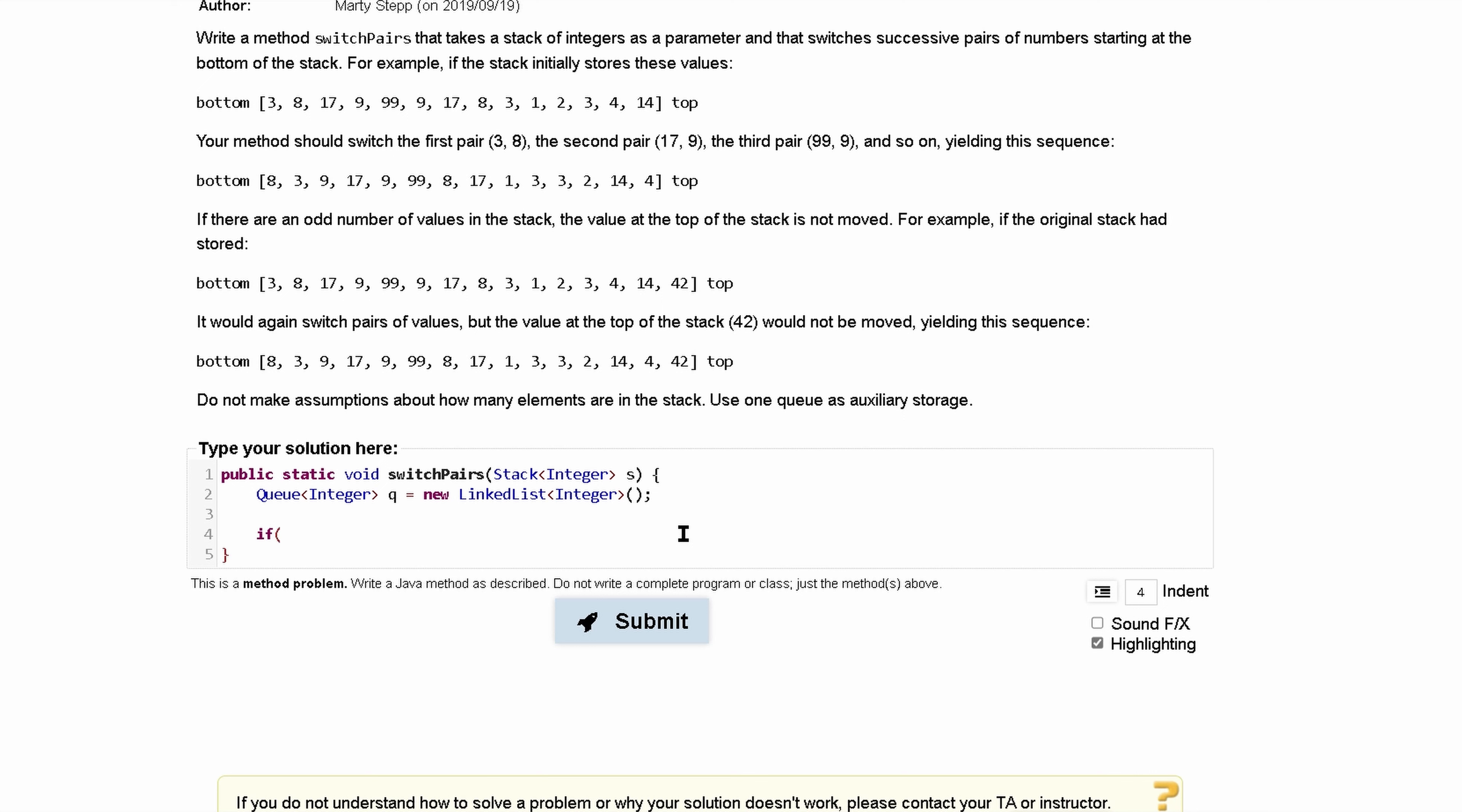So let's do that first. First, we need to check if it's odd. If it is odd, we're going to add it to our queue. Otherwise, we are going to, until our stack is empty, we're going to be switching these next pairs because we know they have to have an even counterpart. They have to have at least two of them.